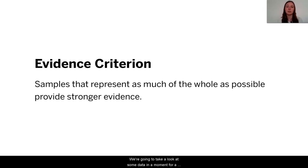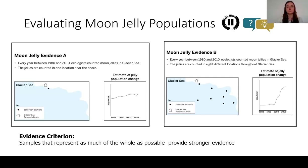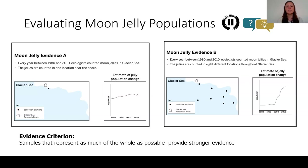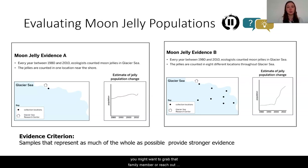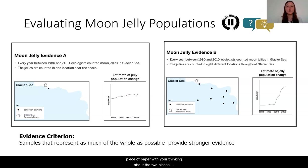We're going to take a look at some data for our moon jelly populations and try to figure out which is the strongest piece of data to go off of. Here we have two pieces of evidence about moon jelly population samples. Both pieces of evidence were taken between 1980 and 2002. The ecologists counted moon jellies and, as you'll see, there are some differences between what the evidence showed and where it was collected. I'd like you to pause the video and discuss — which is the strongest piece of evidence? What are these different evidence cards telling you about the moon jelly population?